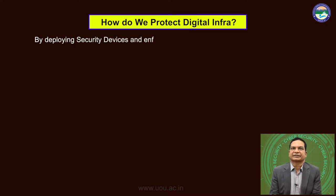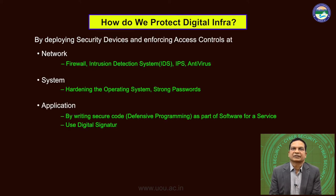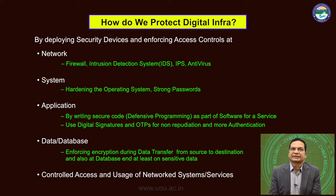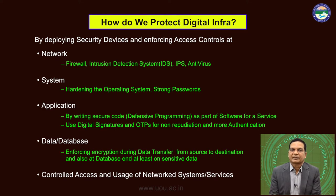How do we protect the digital infrastructure? By deploying security devices and enforcing access control at the network level, system level, application level, and data or database level. One can protect the digital infrastructure by deploying security devices and enforcing access control. At the network domain, devices such as firewall, intrusion detection system, intrusion prevention system, or antivirus are to be deployed to protect the network domain.